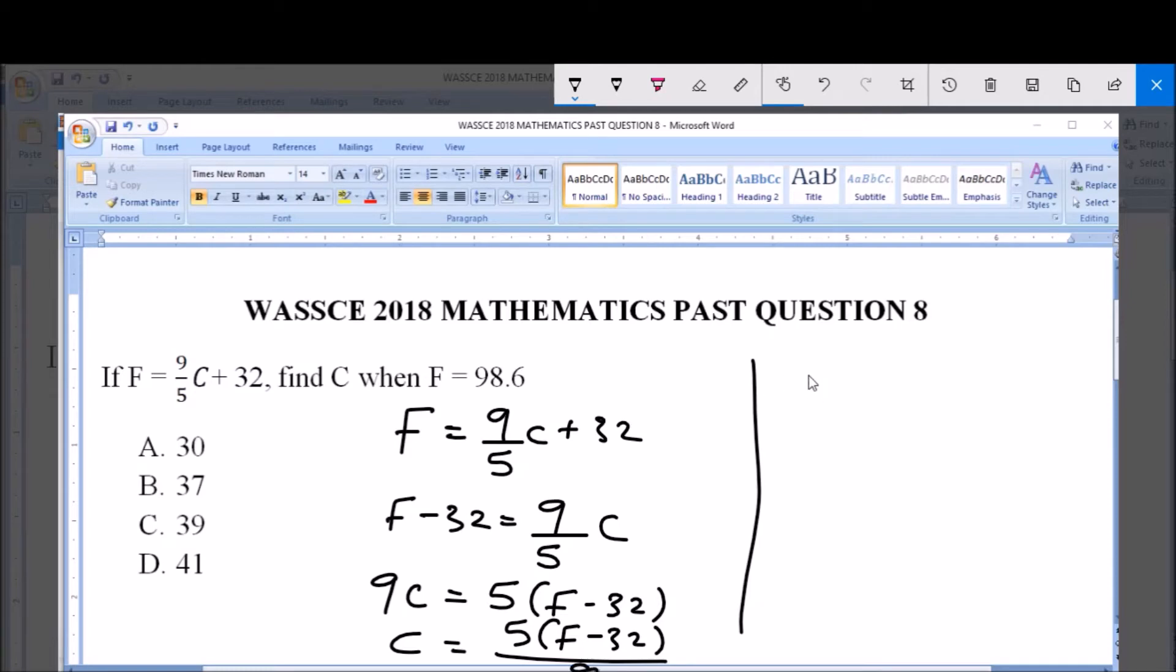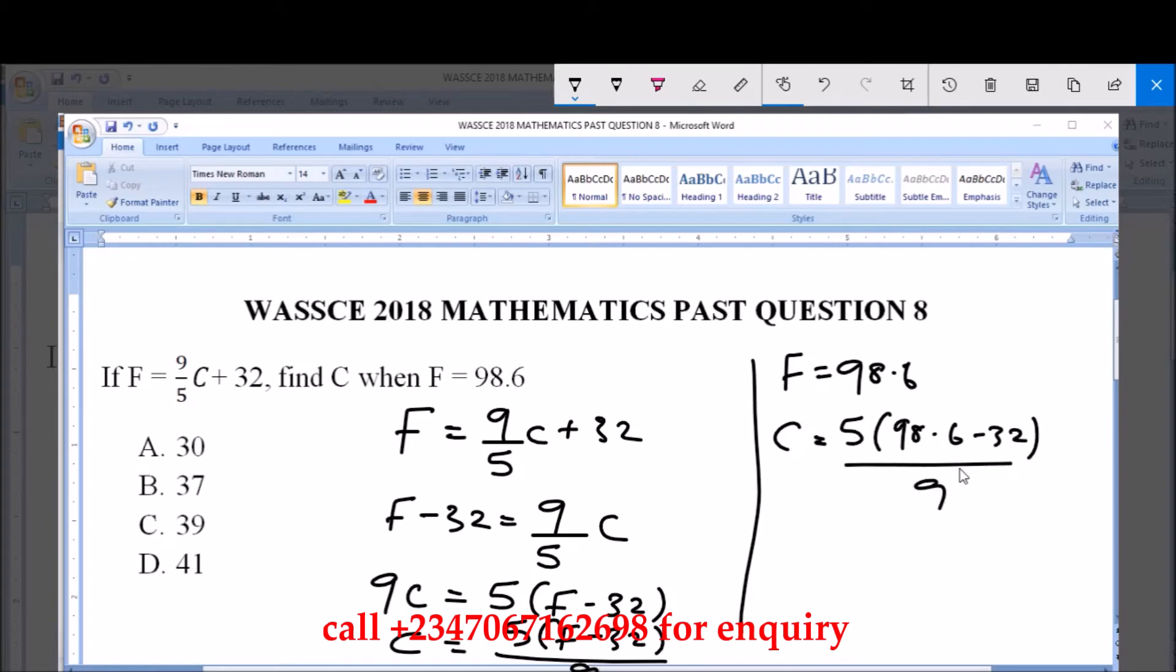Now we're given that we should find C when F equals 98.6. So C is equal to 5 times (98.6 minus 32) all over 9.